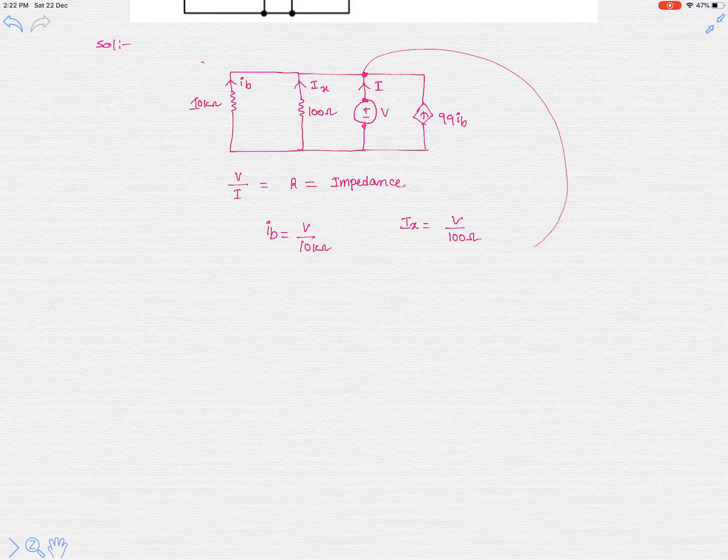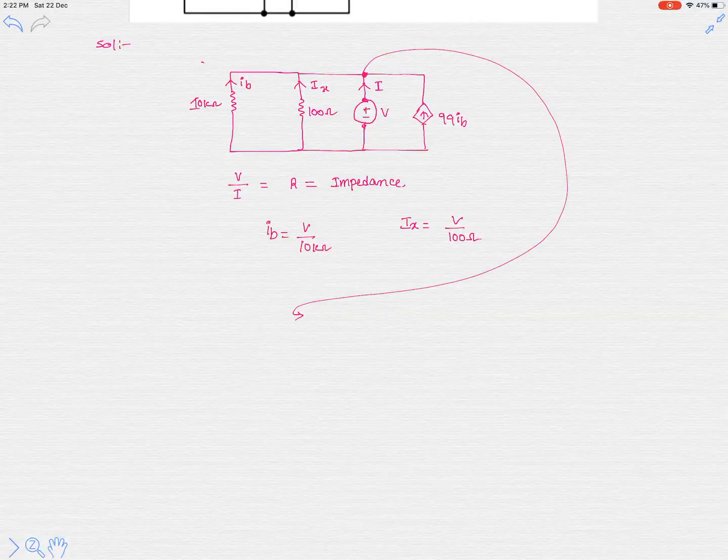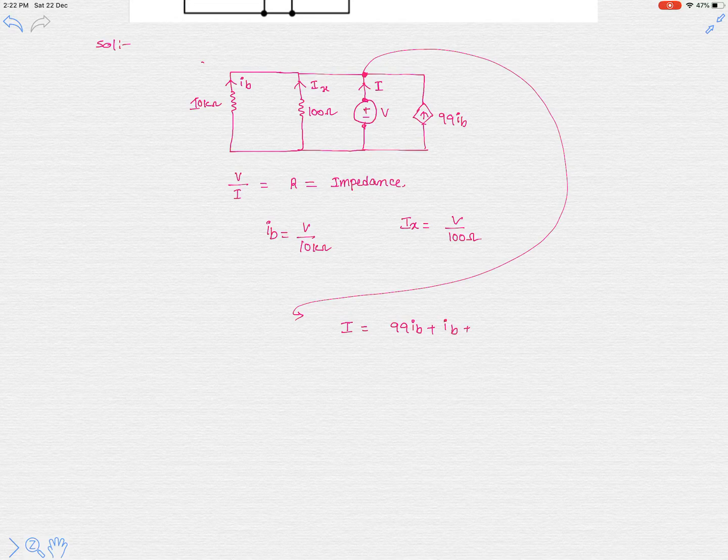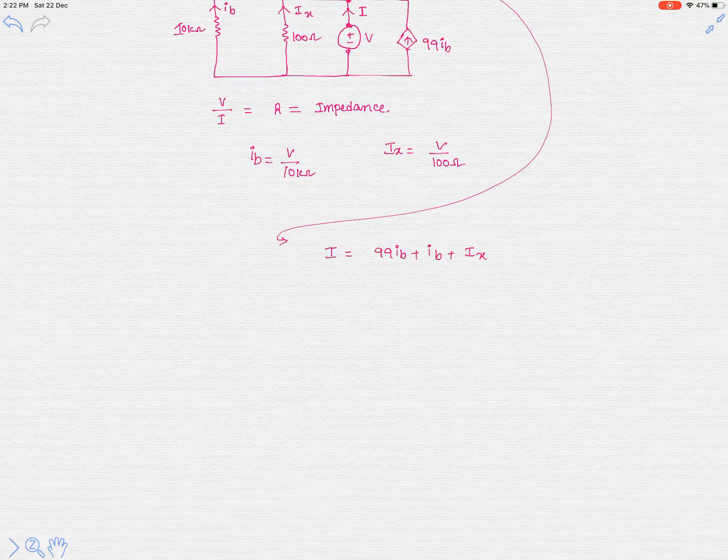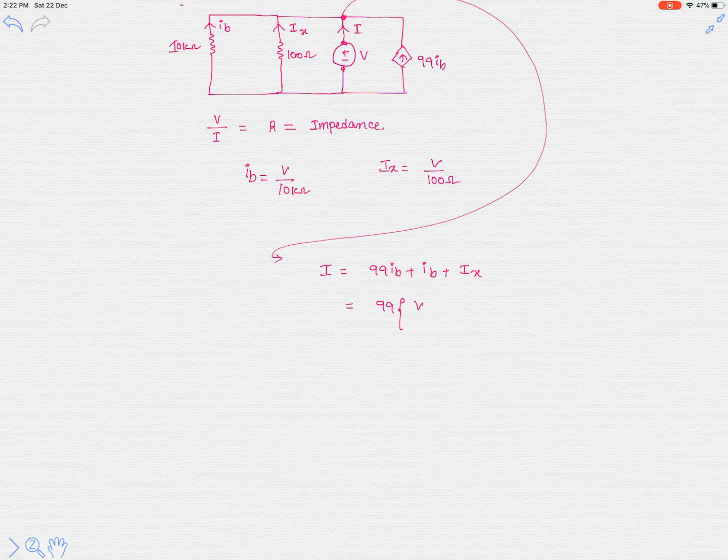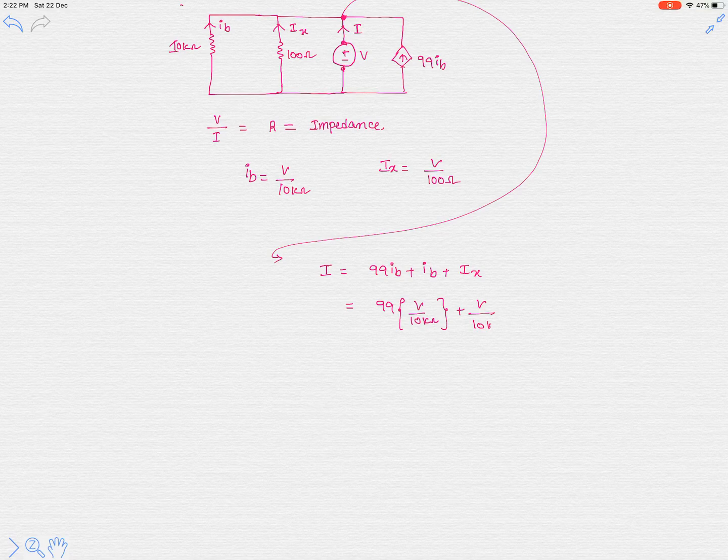By writing the KCL equation here, we can tell I equals 99Ib plus Ib plus Ix. We know that 99Ib is simply V over 10 kilo-ohm, so it is again V over 10 kilo-ohm here, and Ix is V over 100 ohm here.